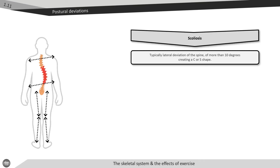The first postural deviation we'll look at is scoliosis. Scoliosis is a postural deviation typically indicated by the lateral curvature of the spine greater than 10 degrees. This creates a C or an S shape. There are two primary categories for scoliosis: structural and non-structural.